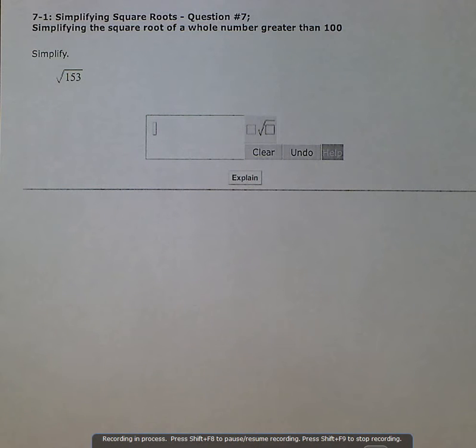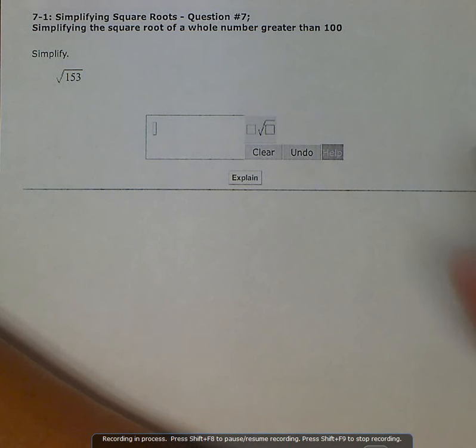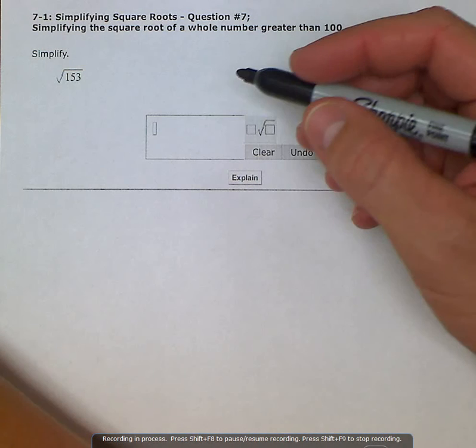Here we're asked to simplify the square root of 153. The square root of 153 is not a perfect square, so it's asking us to simplify it, reduce it down like we would a fraction.